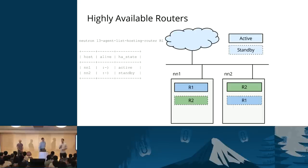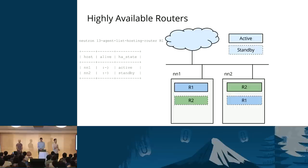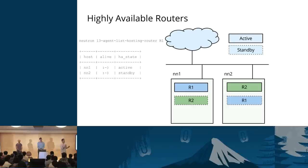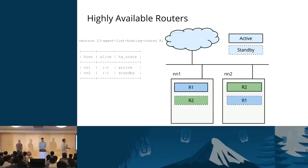During the Juno cycle, we introduced highly available routers, which means when you create a router it's preemptively scheduled to multiple nodes — configurable. For each router, you get replicas: for the blue router in this example, two replicas, one on each node. There's a command that, just like with DHCP earlier, shows all agents hosting a given router. There's also a new HA state column in the output — we'll talk about that in a minute.